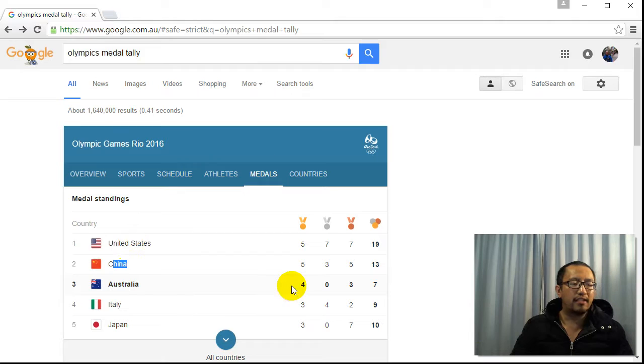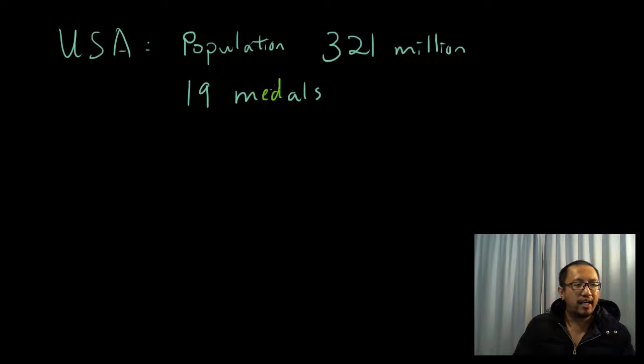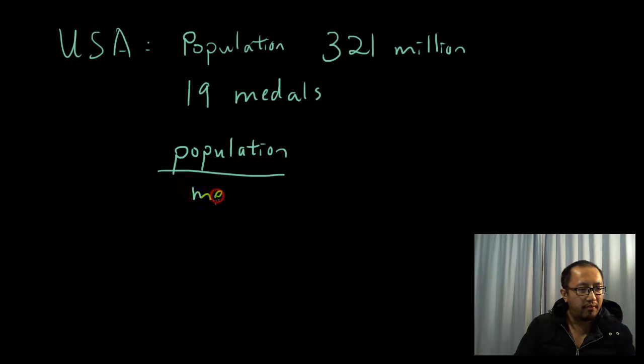So the first thing we're gonna look at is the United States. Now the United States has a population of 321 million people and they have 19 medals. So what we're gonna do is we're gonna find the ratio of population per medal. We want to work out how many people is it for one medal.